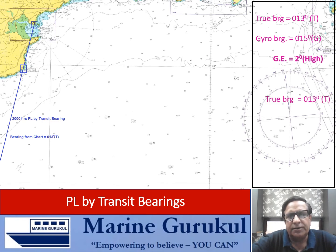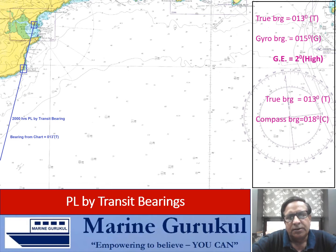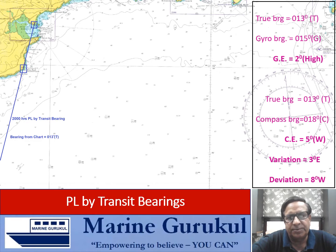The true bearing is 013 degrees; the compass bearing given in the question is 018 degrees compass. The compass error is therefore 5 degrees, and it shall be west — compass best, error west. Compass error is 5 degrees west. Variation is 3 degrees west as given in the question, therefore the deviation of the ship's head becomes 8 degrees west, because compass error is the algebraic sum of variation and deviation.